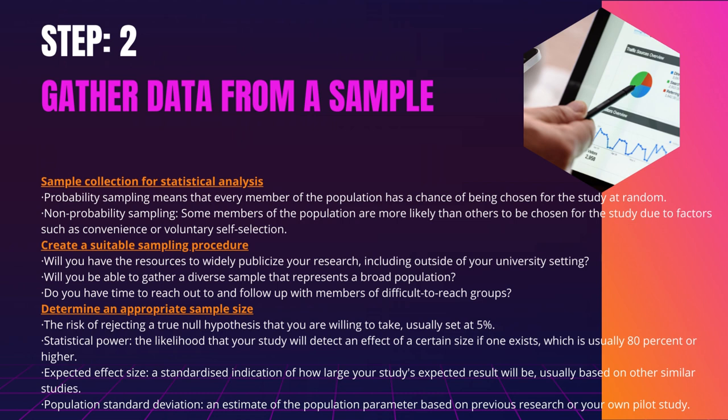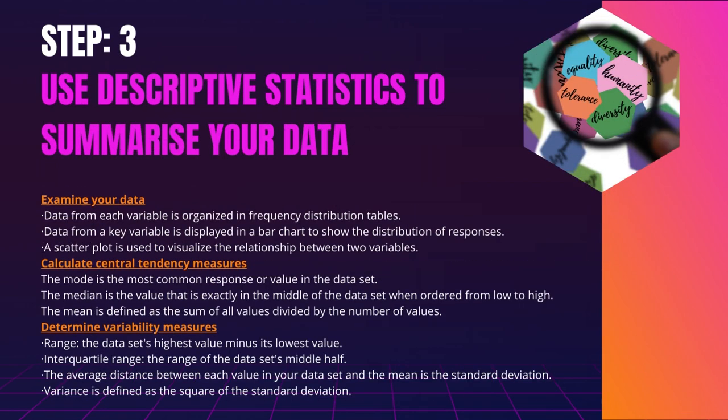Statistical power: the likelihood that your study will detect an effect of a certain size if one exists, which is usually 80% or higher. Expected effect size: a standardized indication of how large your study's expected result will be, usually based on other similar studies. Population standard deviation: an estimate of the population parameter based on previous research or your own pilot study.